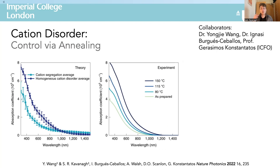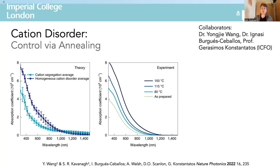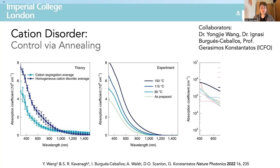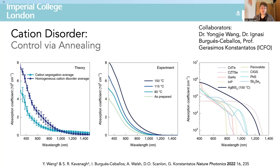Our collaborators in Barcelona applied low-temperature annealing treatments to the as-synthesised nanocrystals to induce an entropically driven shift toward a more homogeneous cation distribution. In doing so they found the same absorption enhancements that we had calculated, with a doubling of the absorption coefficient across the visible range. With this absorption enhancement, we obtained a material with an absorption coefficient higher than any other solar material currently being studied, which was really exciting.